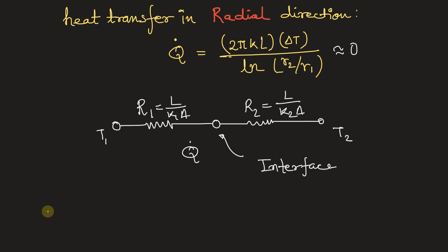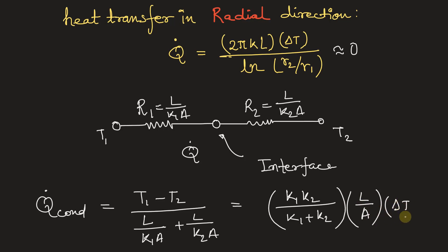The heat transfer rate by conduction is equal to T1 minus T2 divided by the equivalent resistance. That will be R1 plus R2, which is L upon K1*A plus L upon K2*A. If you take the LCM and multiply, we will get K1 times K2 divided by K1 plus K2 times A upon L times delta T. Here delta T is T1 minus T2. Let this be equation number one.